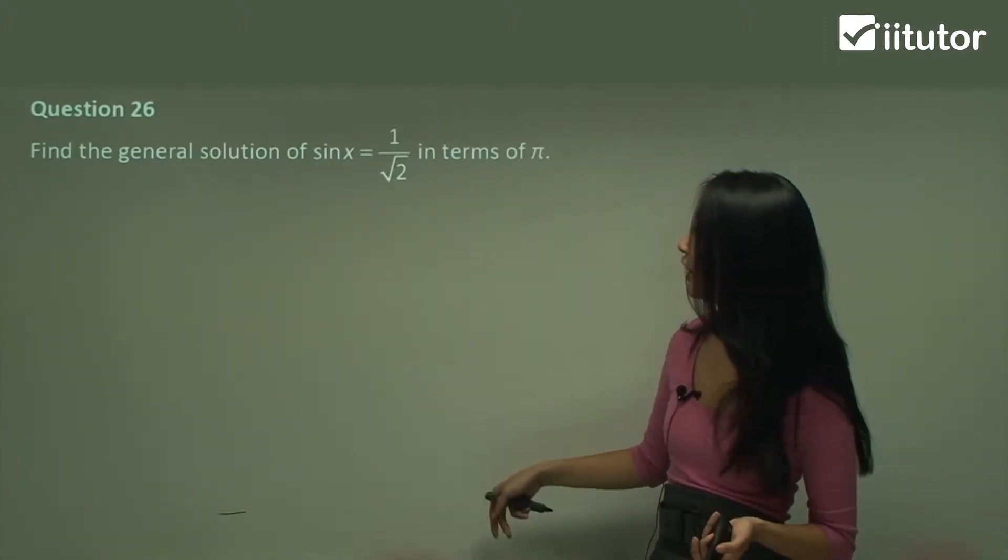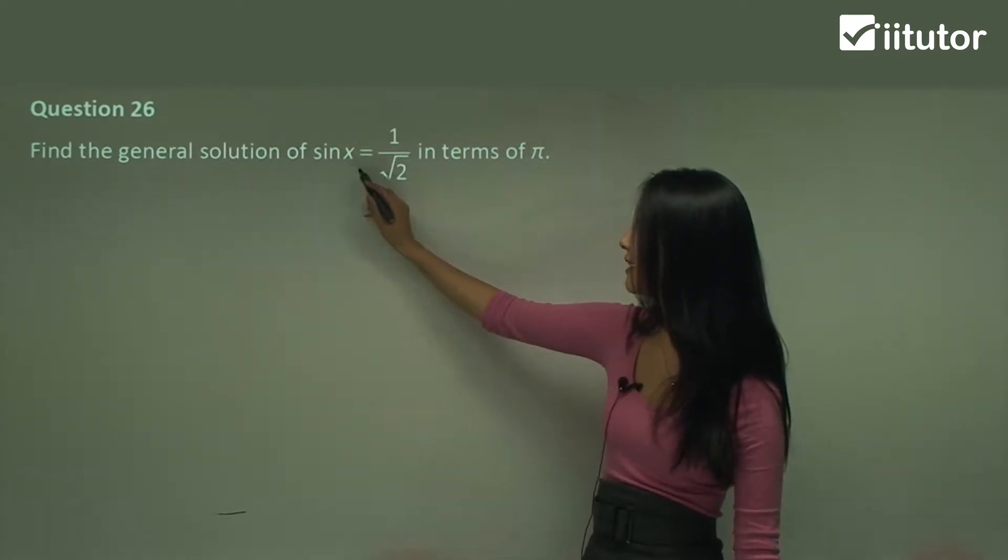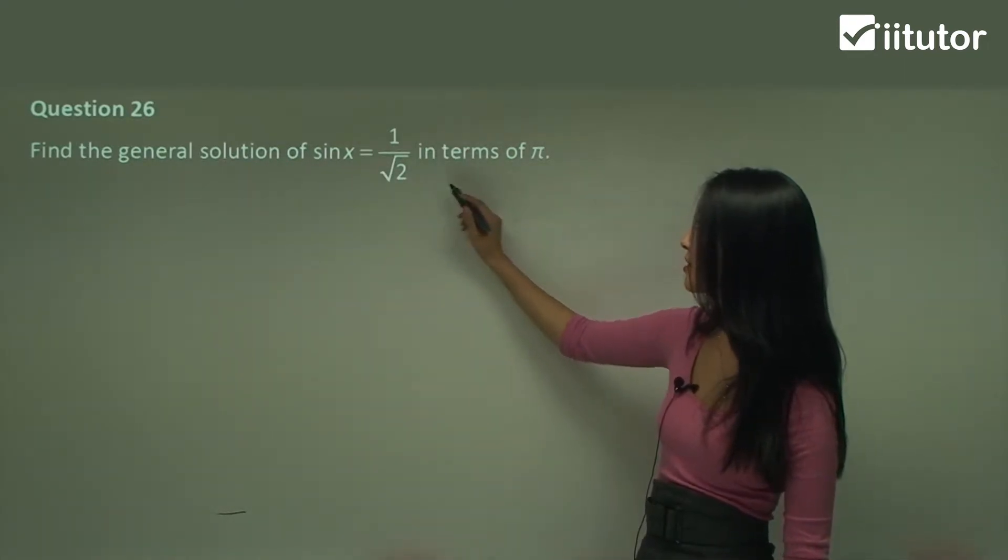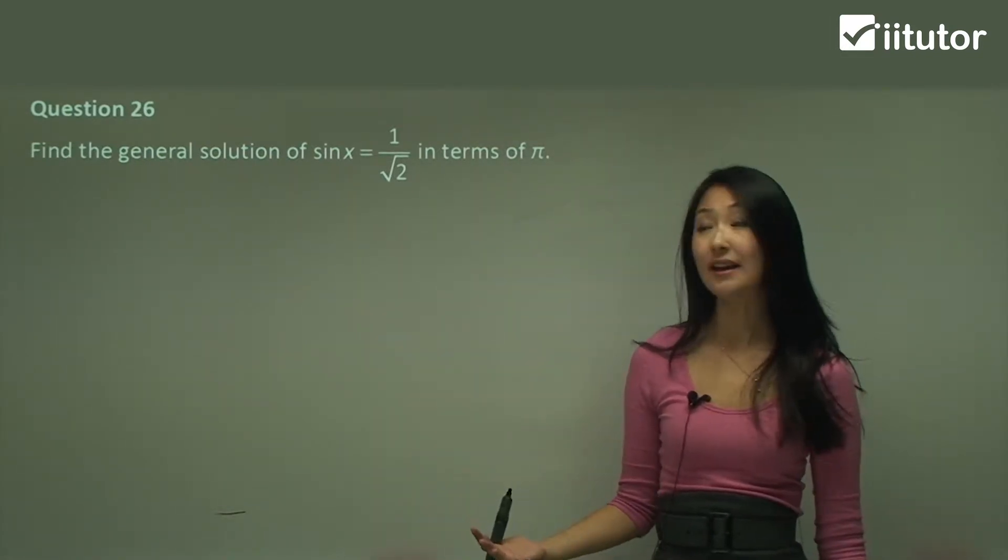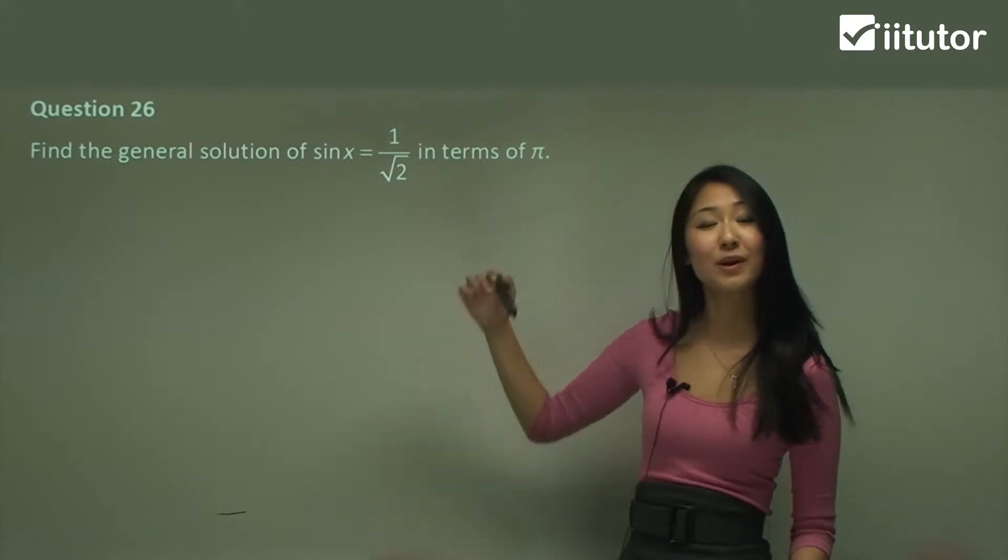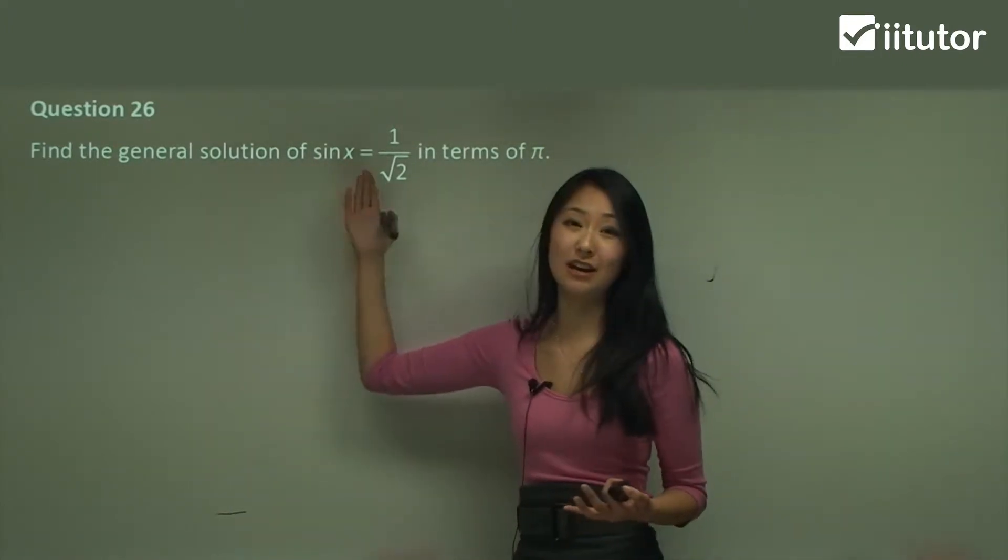So question 26, find the general solution of sine x equals to 1 on square root 2 in terms of pi. Okay so generally your general solution will be in terms of pi and questions like this does come up in exams where it just tests your knowledge of the general solution.